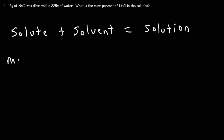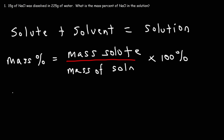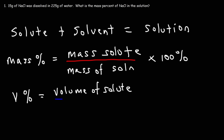The next equation to write down is mass percent. Mass percent is equal to the mass of the solute divided by the mass of the solution times 100%. Volume percent, which you can write as V percent, is very similar — it's equal to the volume of the solute divided by the volume of the solution times 100%.